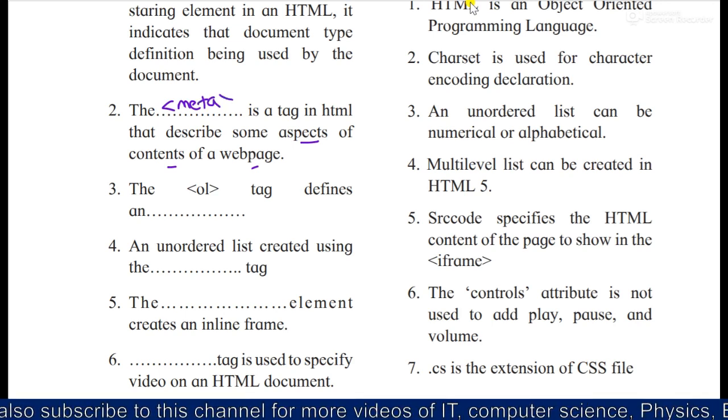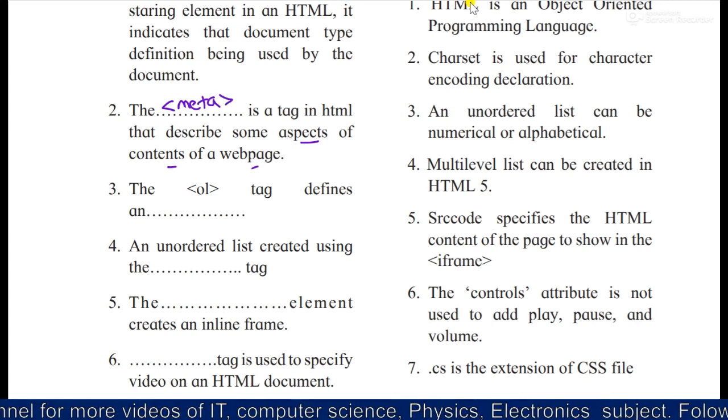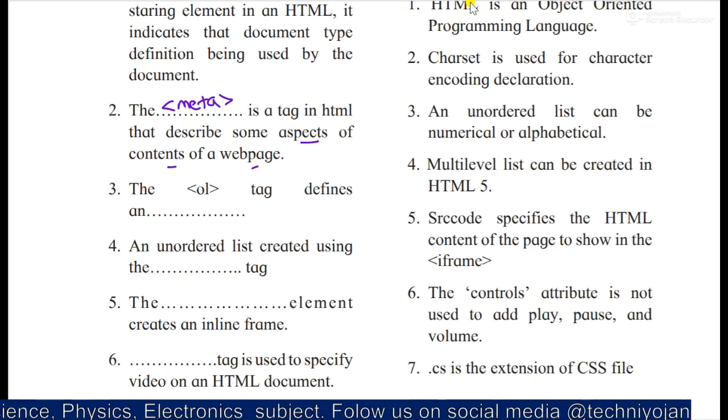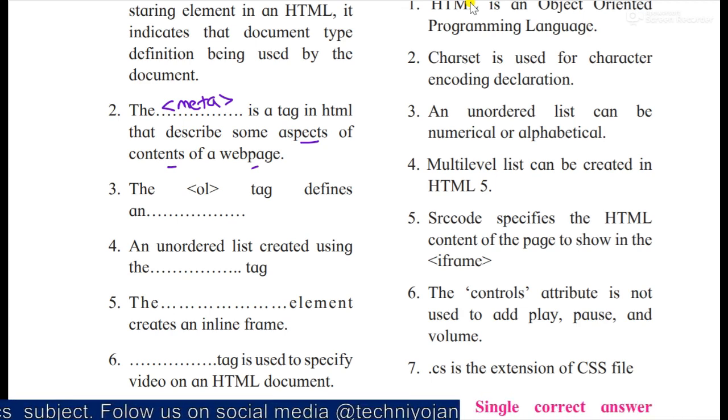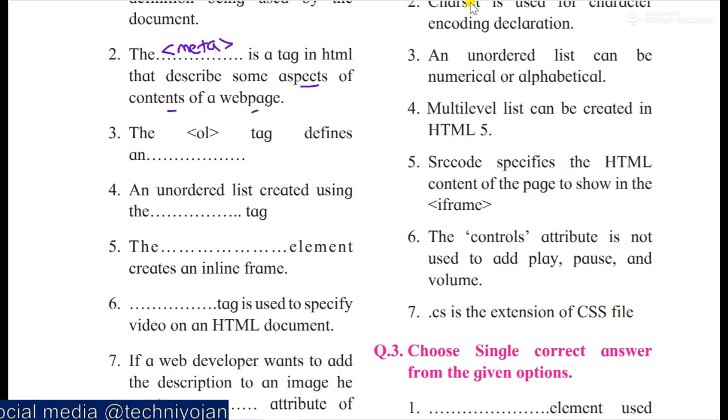The meta is a tag in HTML that describes some aspects of contents of web page. Then the OL tag defines an ordered list. You can see, so the answer will be ordered list. And an unordered list created using the dash tag. If OL is for order, then you can say UL tag.